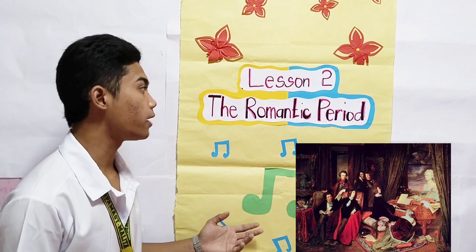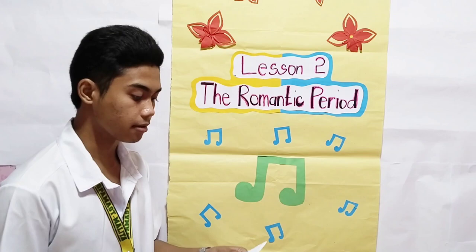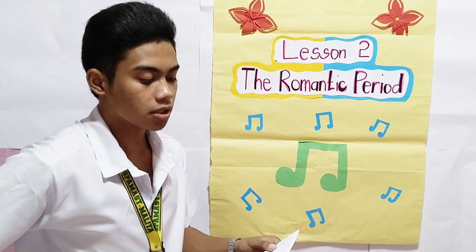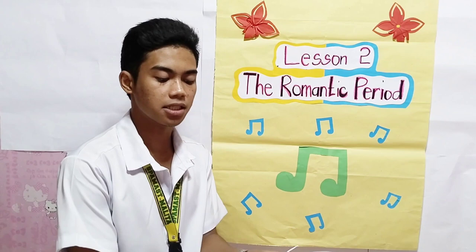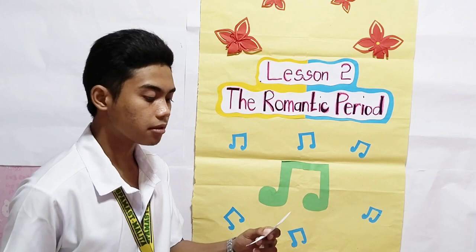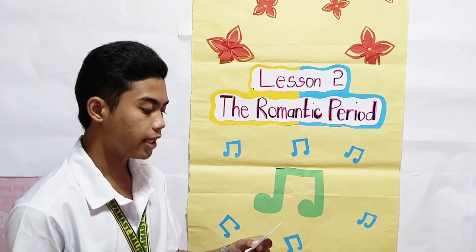Let's proceed to Lesson 2, the Romantic Period. The Romantic Period was a cultural movement that emerged in Europe during the 18th and 19th centuries. It was characterized by a focus on emotion, individualism, the celebration of nature, and the imagination. The Romantic Movement had a significant impact on many areas of culture, including literature, arts, and music.